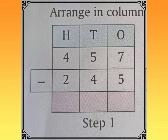As you can see in the picture, arrange in columns. First position is O (ones), T (tens), H (hundreds). After that you have to place the numbers. This is the first step.